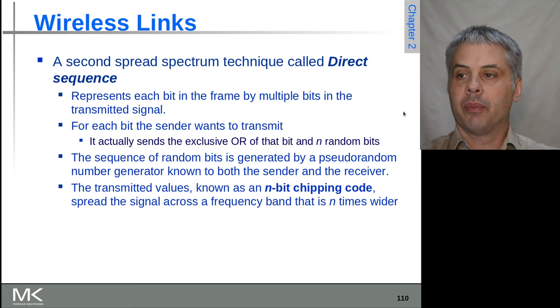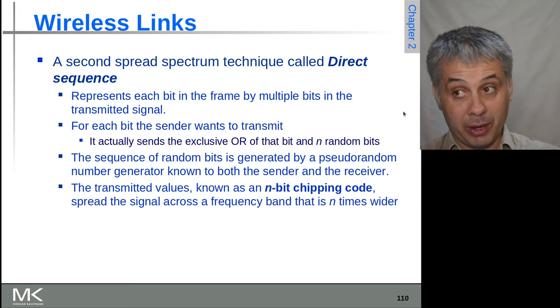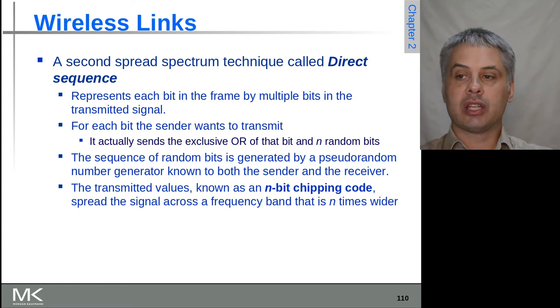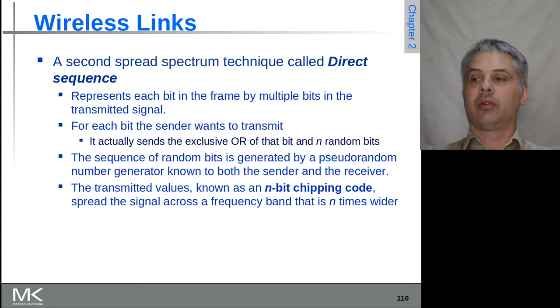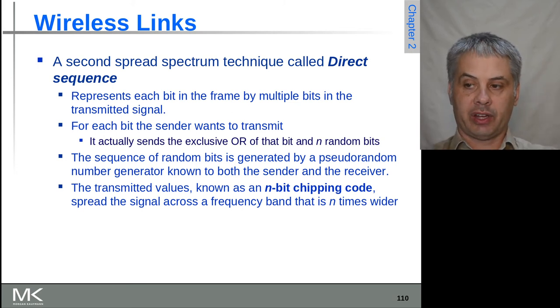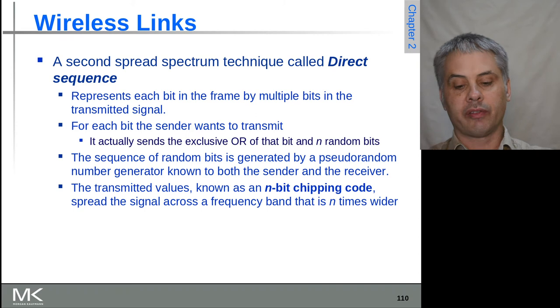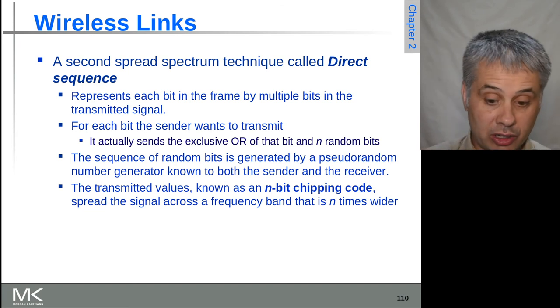Another spread spectrum technique is Direct Sequence Spread Spectrum. Each bit in the frame has multiple bits in the transmitted signal and exclusive ORs that with a set of random bits. This generates a pseudo-random signal as far as the spectrum is looking, which helps it hide in the background. If done in parallel across multiple frequencies, you get a signal appreciably wider in frequency, but the transmit power at any particular frequency can be lower so it blends in with background noise yet is still discernible and reconstructable at the other end.